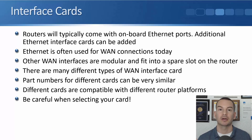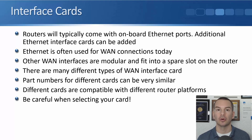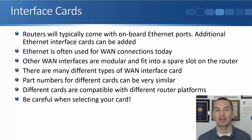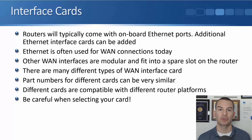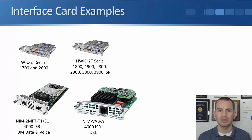The last thing to cover here is WAN interface cards. Routers will typically come with onboard Ethernet ports and additional Ethernet interface cards can be added if you need more ports. Ethernet is commonly used for WAN connections today. Other WAN interface types are modular and fit into a spare slot on the router, and there are many different types of WAN interface cards. Part numbers for different cards can be very similar, and different cards are compatible with different router platforms, so be very careful when selecting your card.